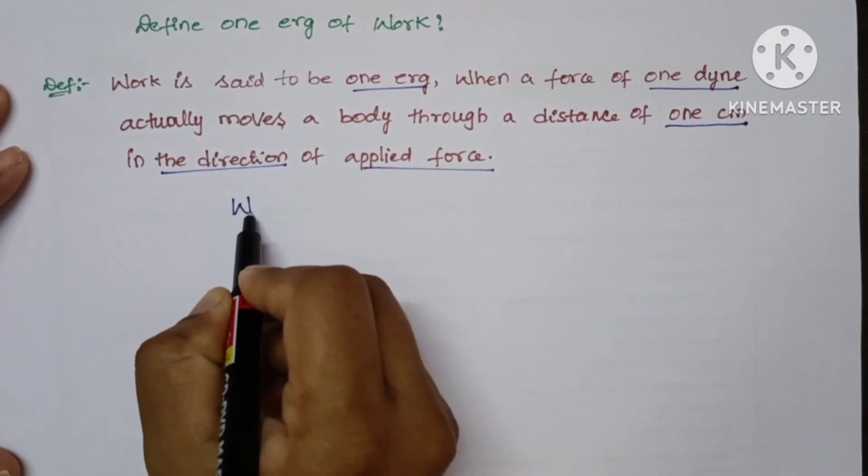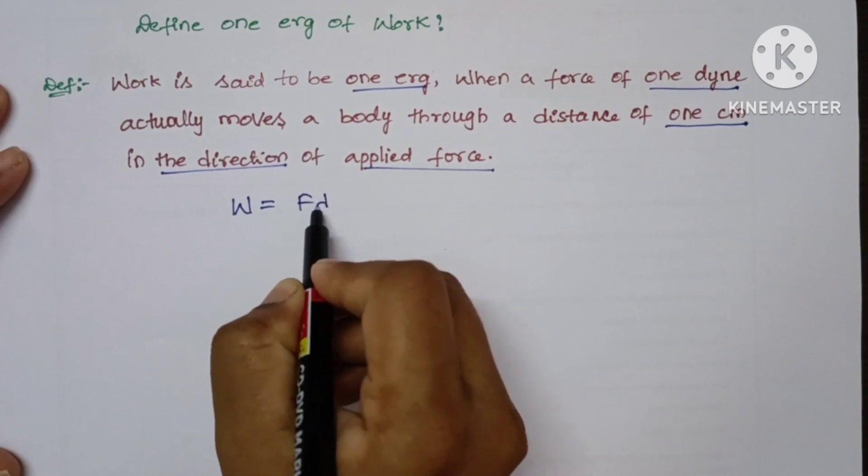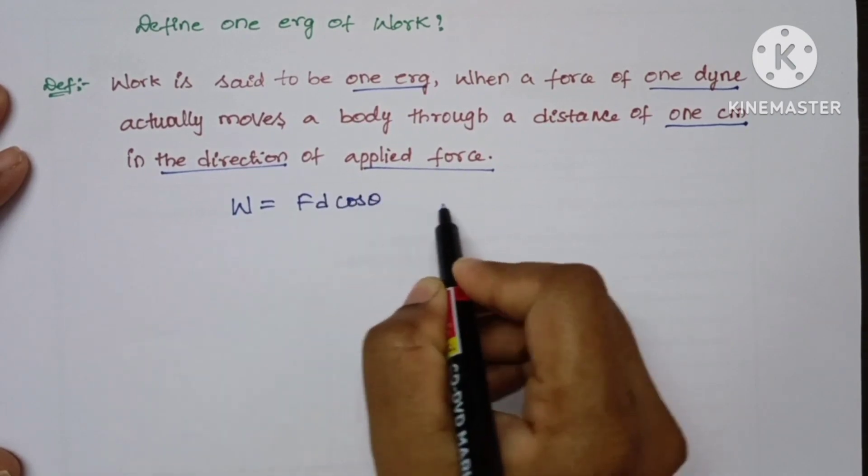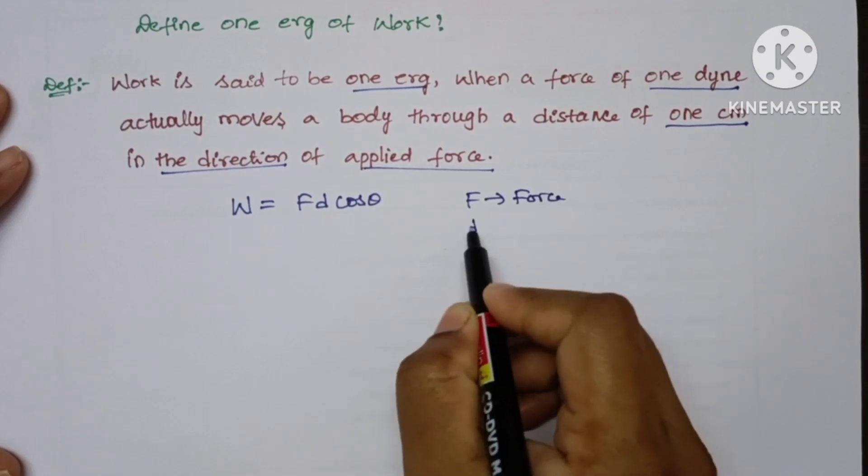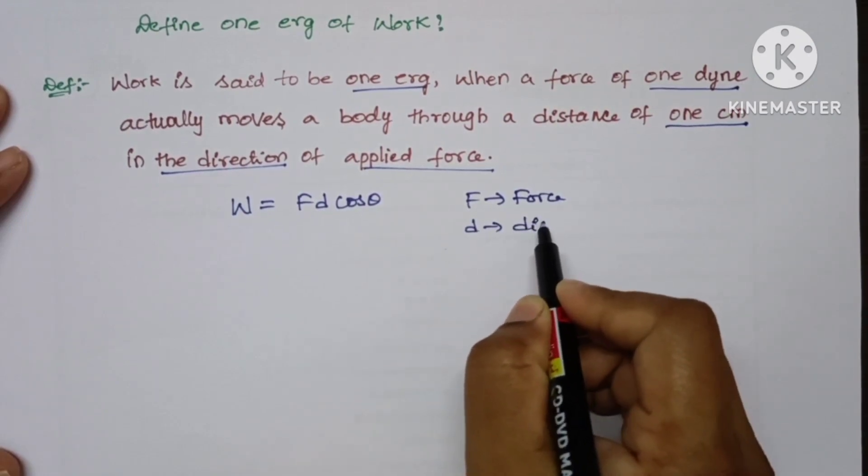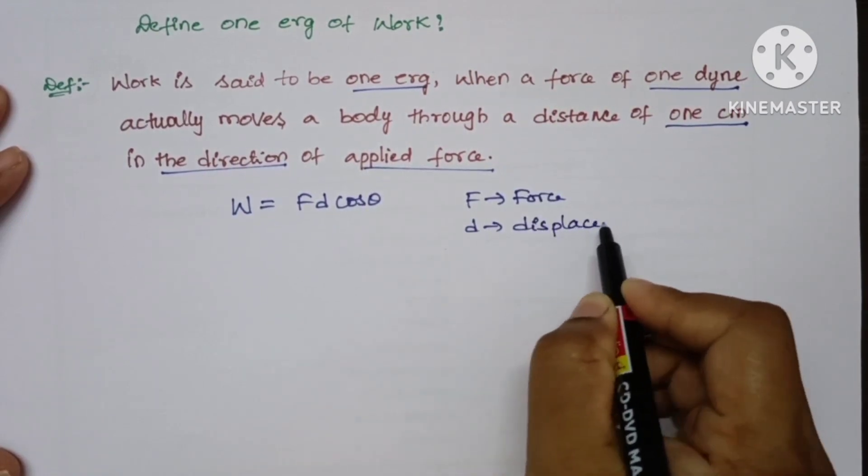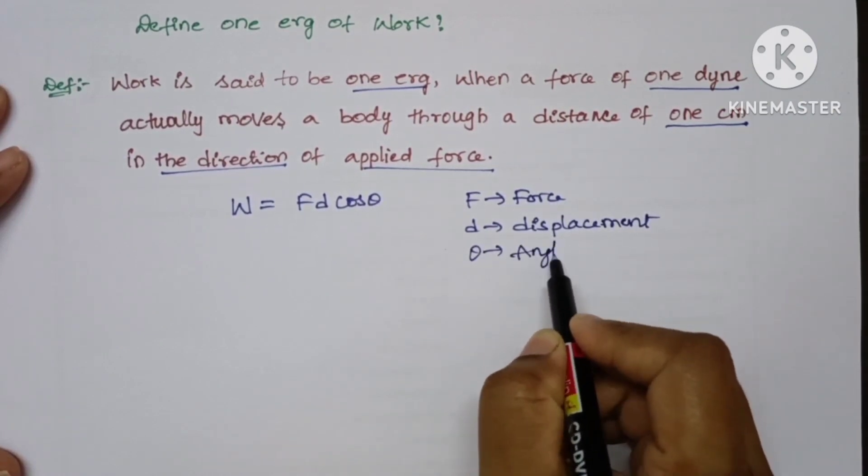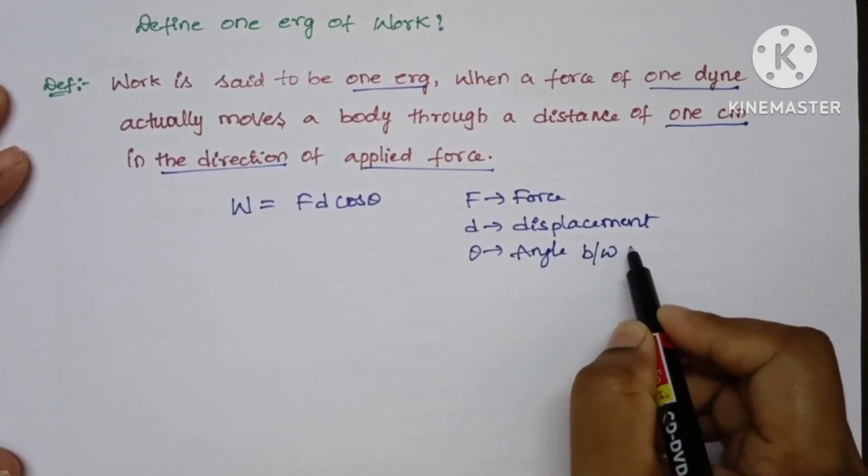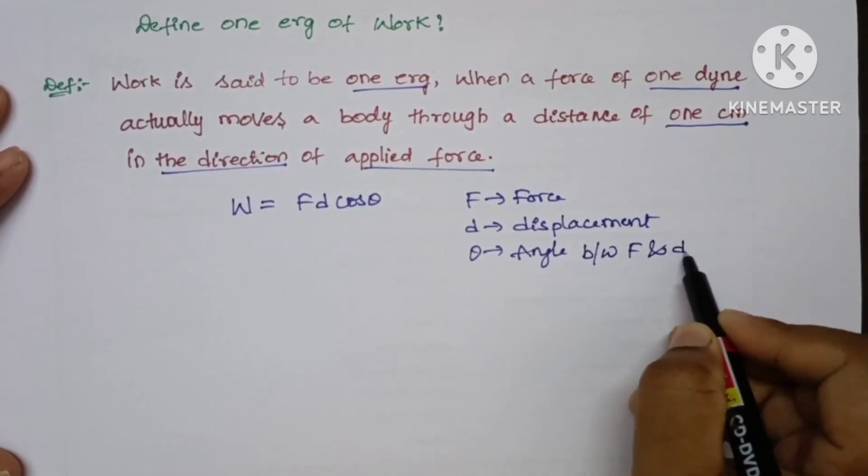We all know that work done is equal to the formula W = Fd cos θ. Here F is the force, D is the displacement, and θ is the angle between force and displacement.